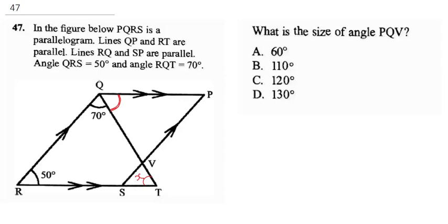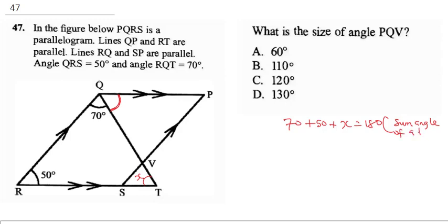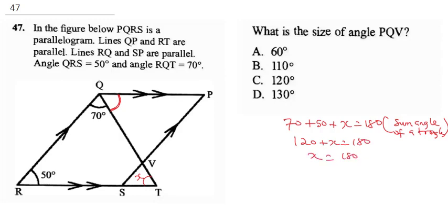This is going to be 70 plus 50 plus X equals 180. This is sum of angles of a triangle. This is going to be 120 plus X equals 180, therefore X will be 180 minus 120, which gives us 60 degrees.